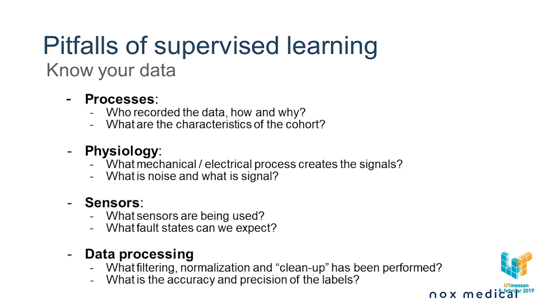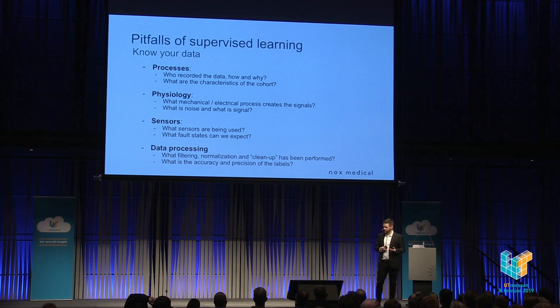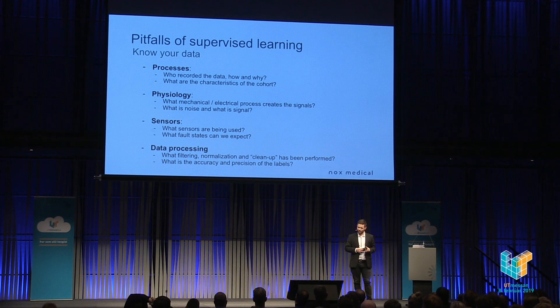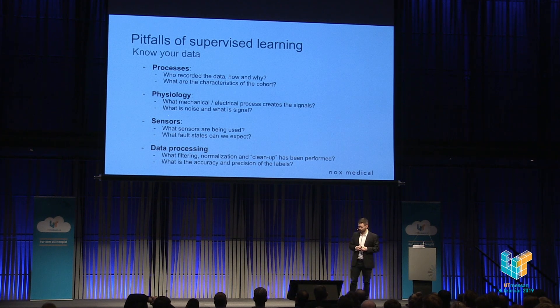Some pitfalls worth mentioning: first, you have to know your data before doing anything. You have to know the processes of how the data was created — who recorded it, how, and why. You have to know the characteristics of the cohort: is your data only composed of males or females, children, old people, previously diagnosed people? You have to know the physiology — what are the mechanical and electrical processes that create the data, to help shift out noise from signal. You also need to know what fault states to expect from sensors and whether any cleanup has been done on your data before you received it.